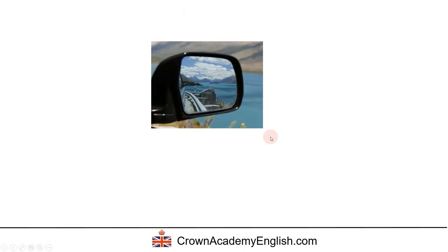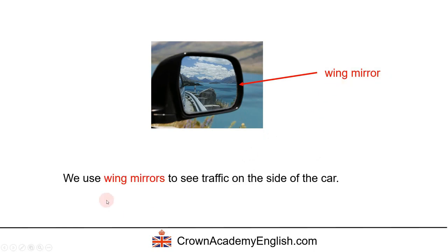We've already seen this, but here is a close-up view. This again is the wing mirror. And we use wing mirrors to see traffic on the side of the car.